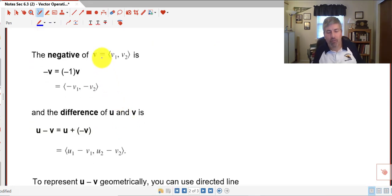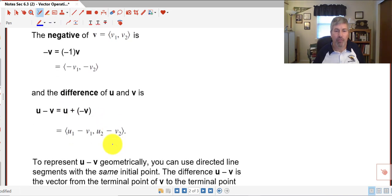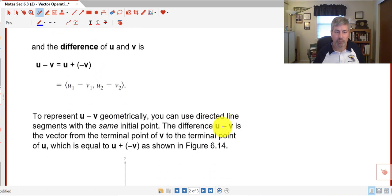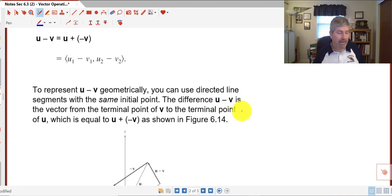The opposite of a vector, as you would think, is changing its direction or distributing or scaling by a negative one. So the opposite of vector v is just taking negative one times v or distributing a negative one to the first coordinate and the second coordinate. And then the difference is the vector that's being subtracted. We will now subtract the first coordinate and subtract the second coordinate of the second vector from the first vector.